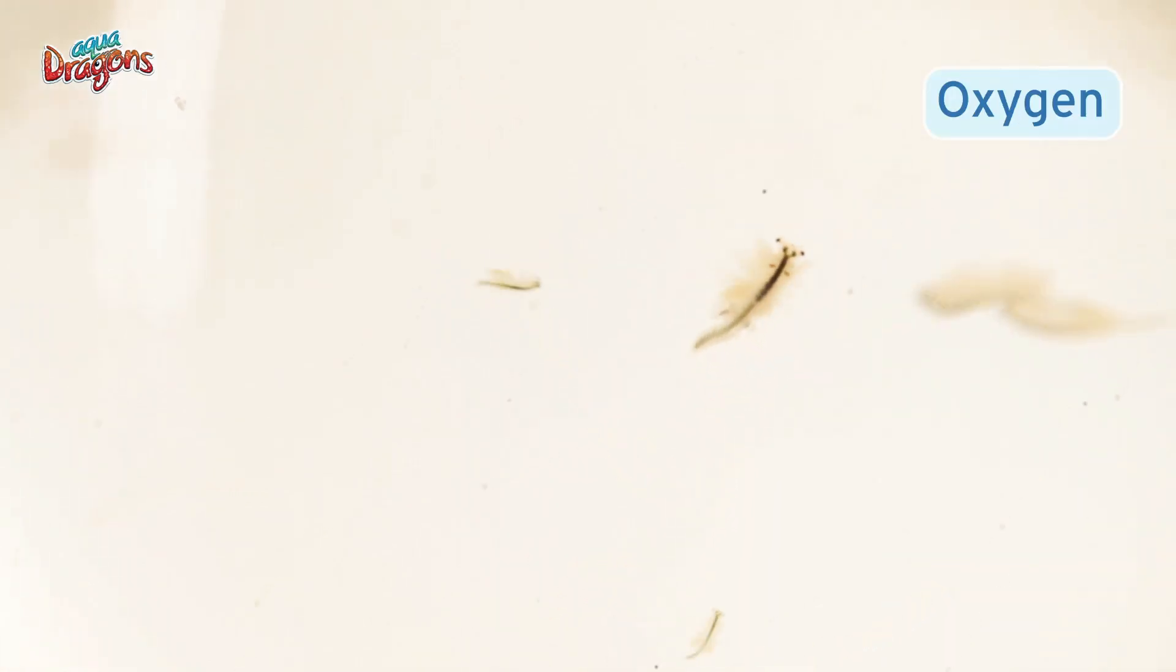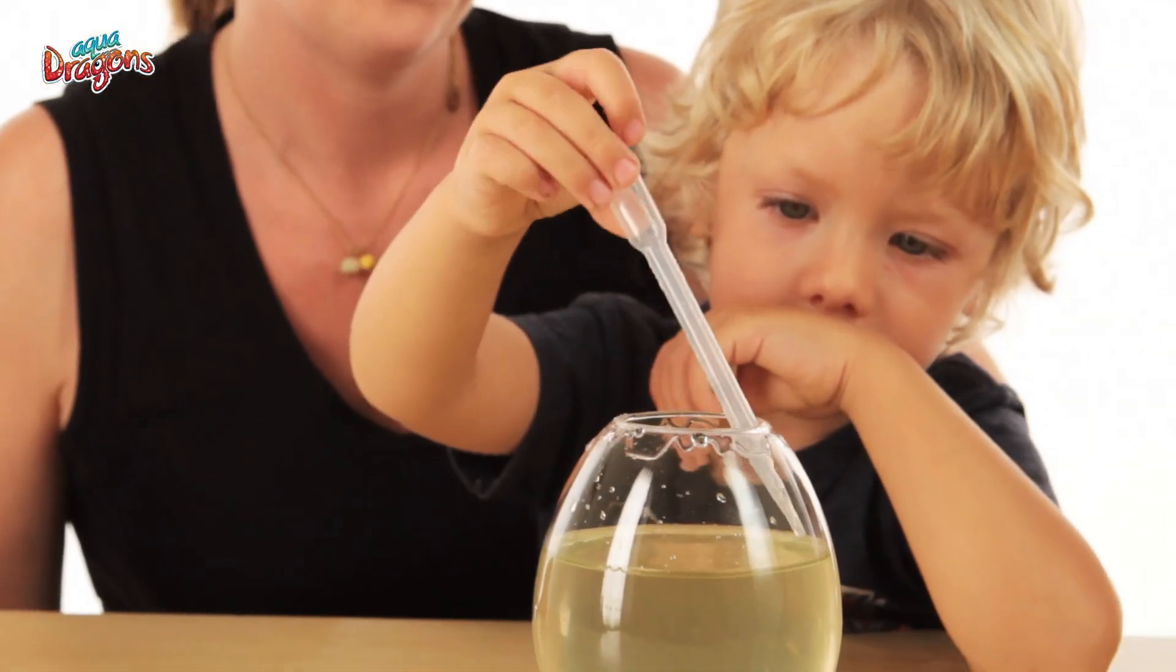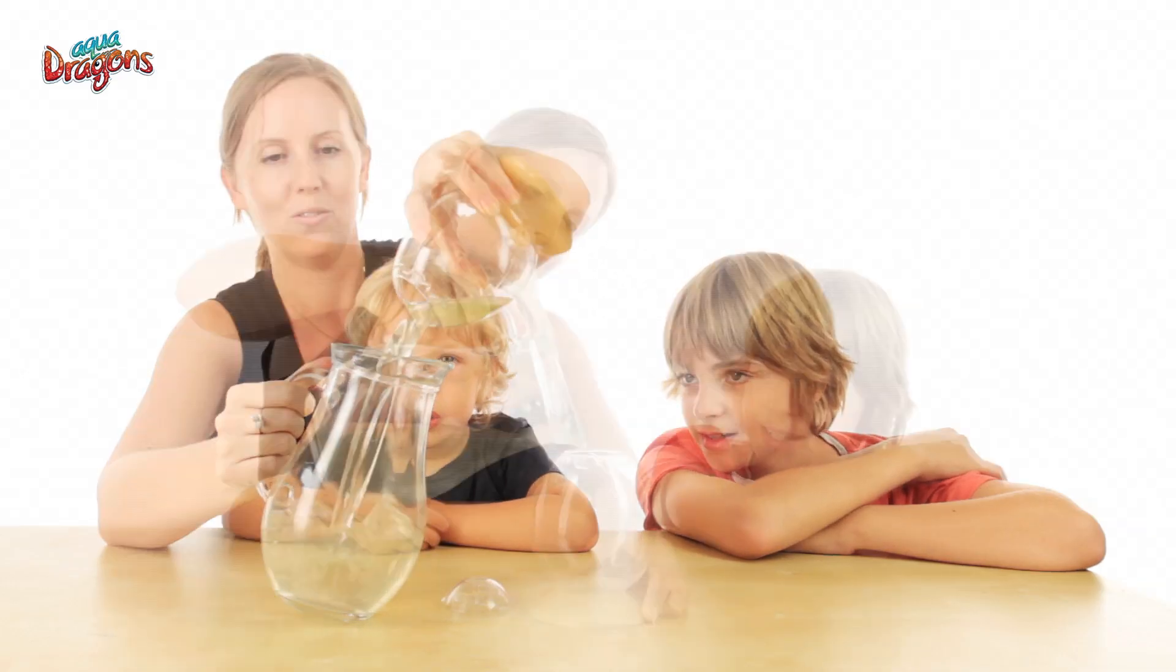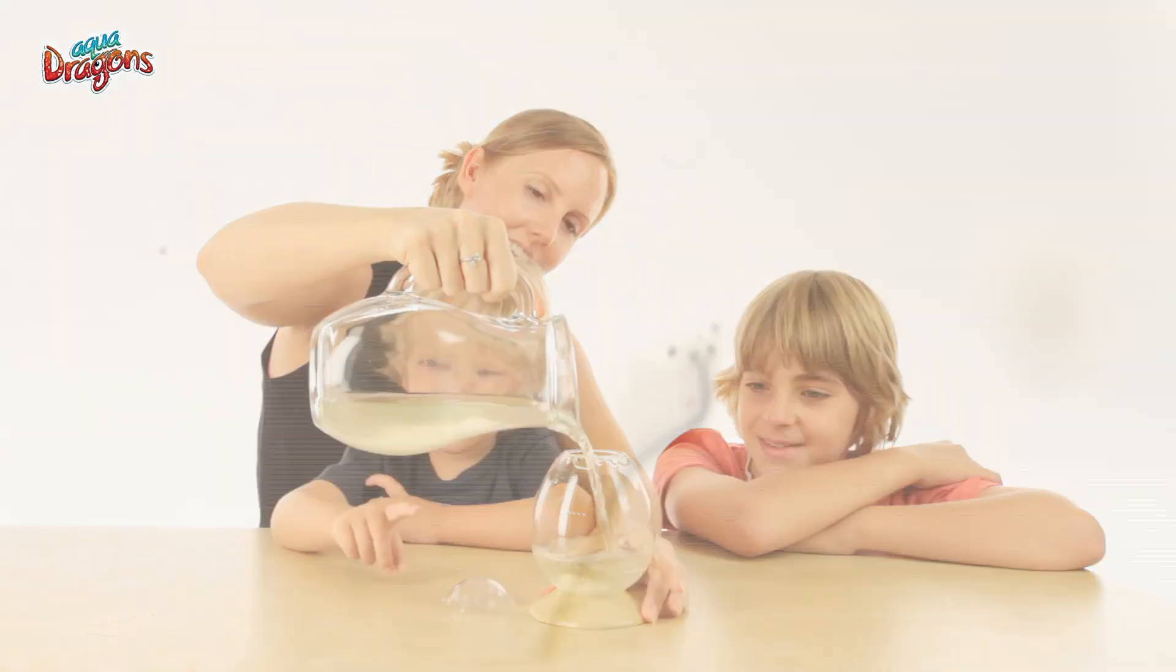The lack of oxygen in the water can be noticed when the aquadragons swim slowly and listlessly. Oxygenate daily with the pipette, or by tipping the water into another recipient and back. After oxygenation, you will notice them swimming faster and happier.